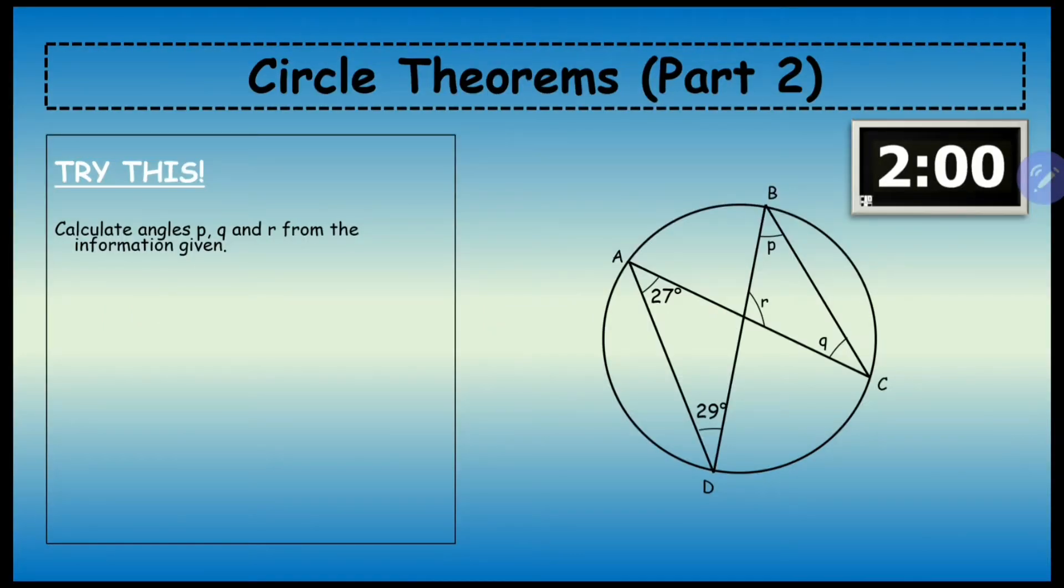Let's have a look at a question. Let's apply the rule: if this angle here is 27°, angle p is also going to be 27° since it's in the same segment. If this angle here is 29°, angle q is also going to be 29°. The rule being the angles in the same segment.